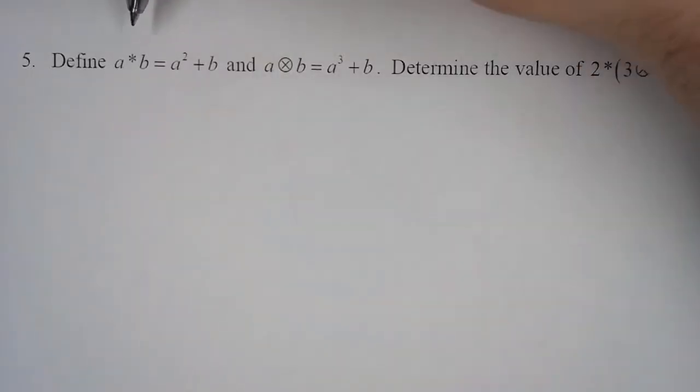In this problem, they give us two operations. A star B equals you take the first number and square it, and then add the second number.